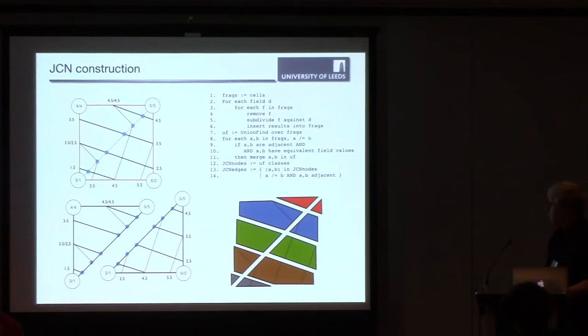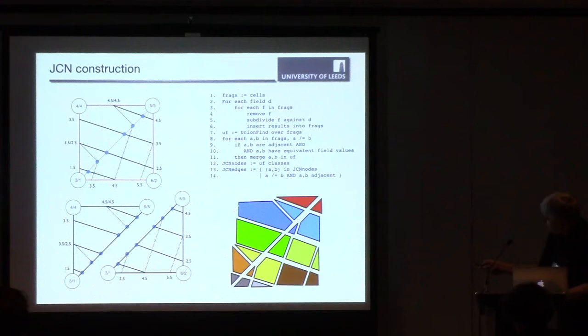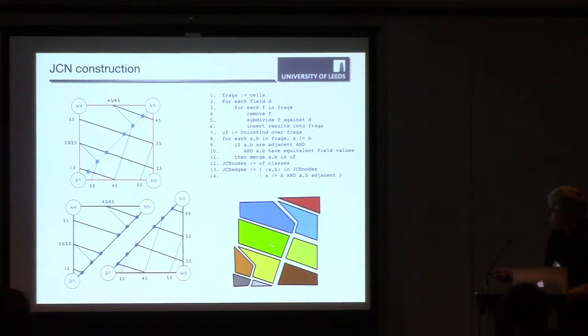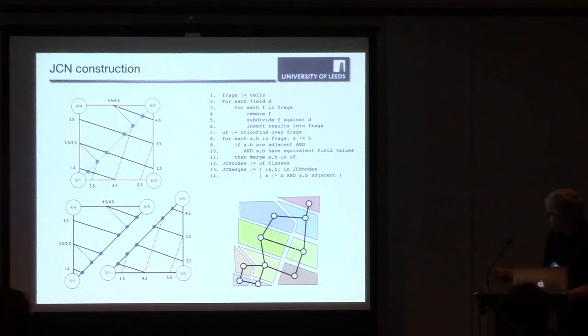And what we do, we start off by taking a cell, fragmenting it initially on the value of the first field. That gives us a larger set of fragments. We then fragment those fragments against the value of the second field. We get a smaller set of fragments. And now we start merging regions. If we have adjacent regions which have the similar set of properties, we merge them together into what we call slabs.